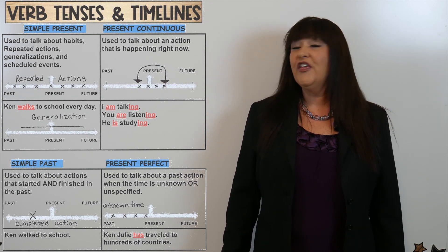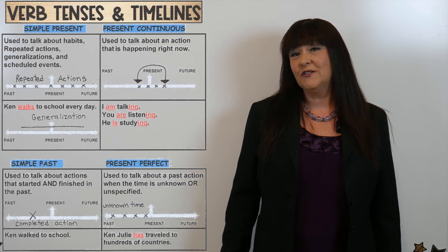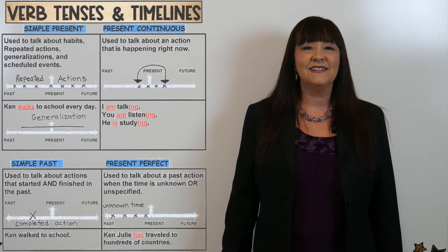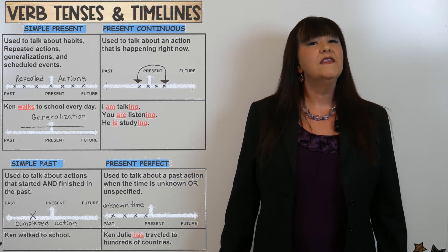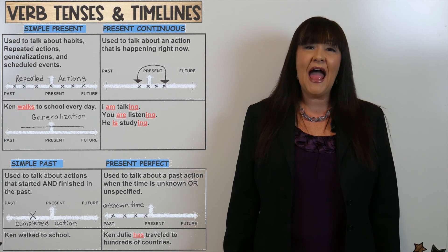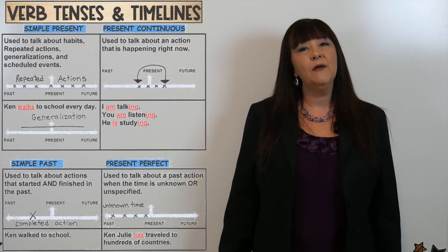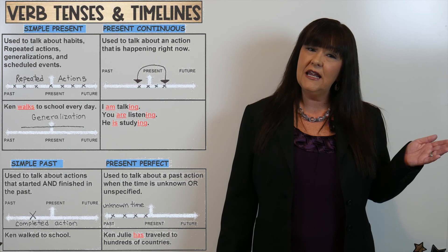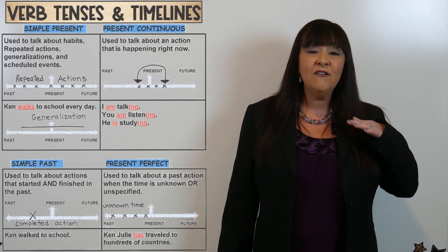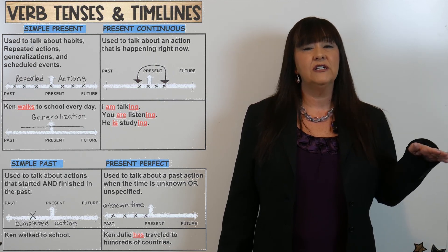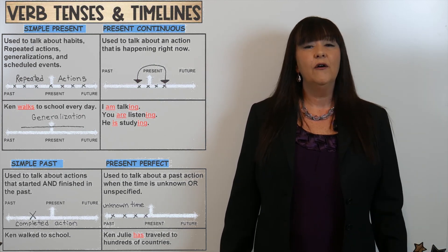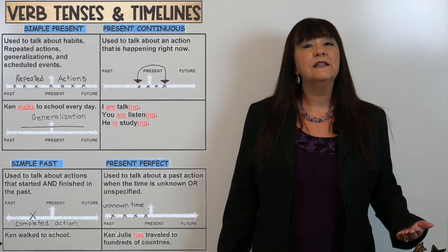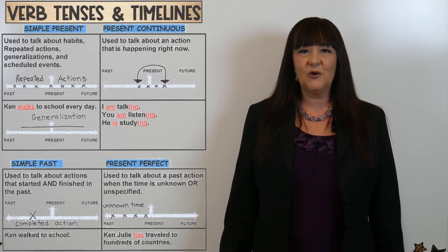The third tense we're going to tell a story with is the simple past. The simple past is used to talk about actions that started and finished in the past. For example: "He walked to school."